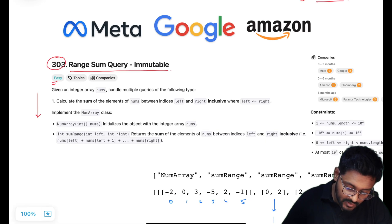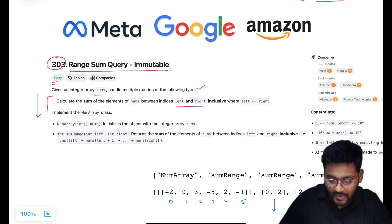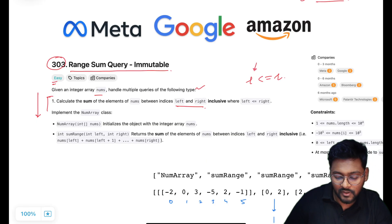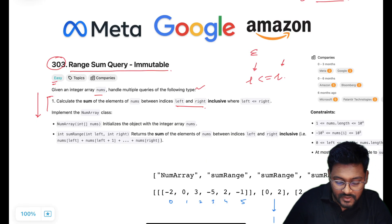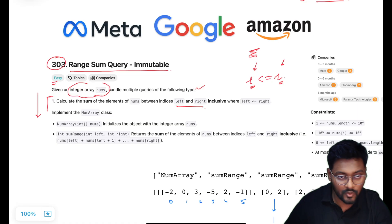We are given an integer array nums. Handle multiple queries of the following type: calculate the sum of elements of nums between the indices left and right inclusively, where left is less than or equal to right. So we are given two indices — left index less than or equal to right index — and we have to find the sum of every single element starting from left to right in the given integer array nums.